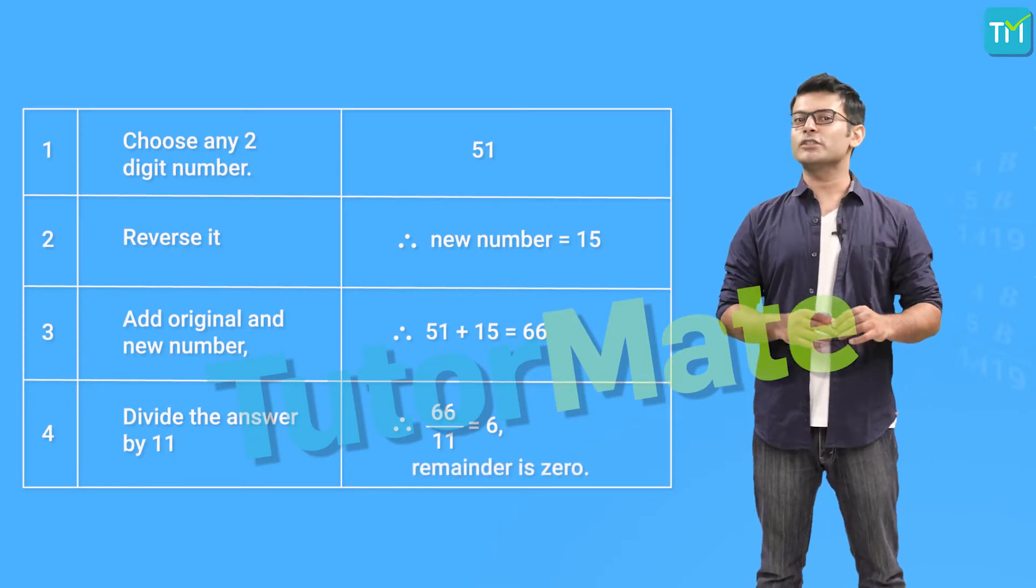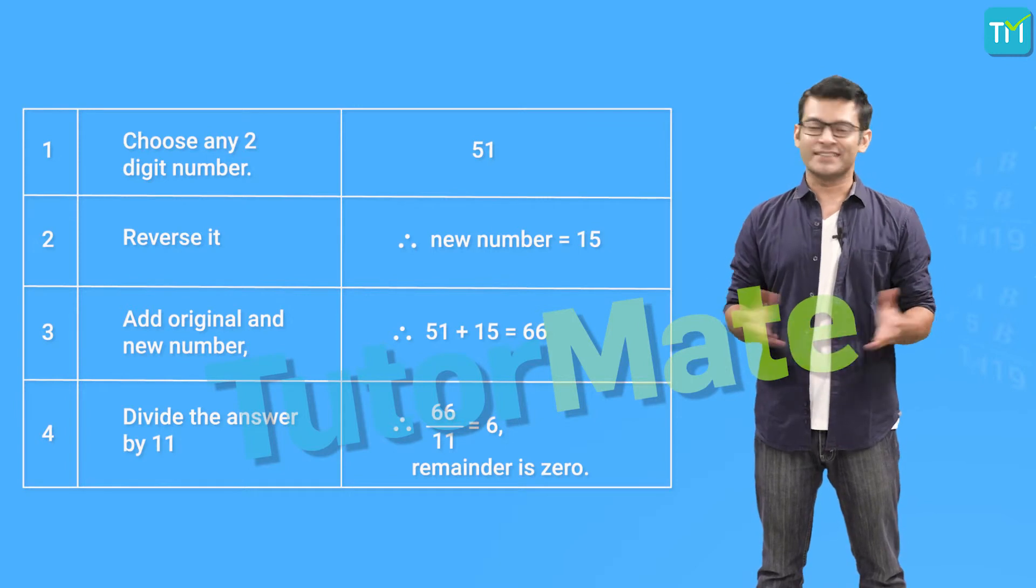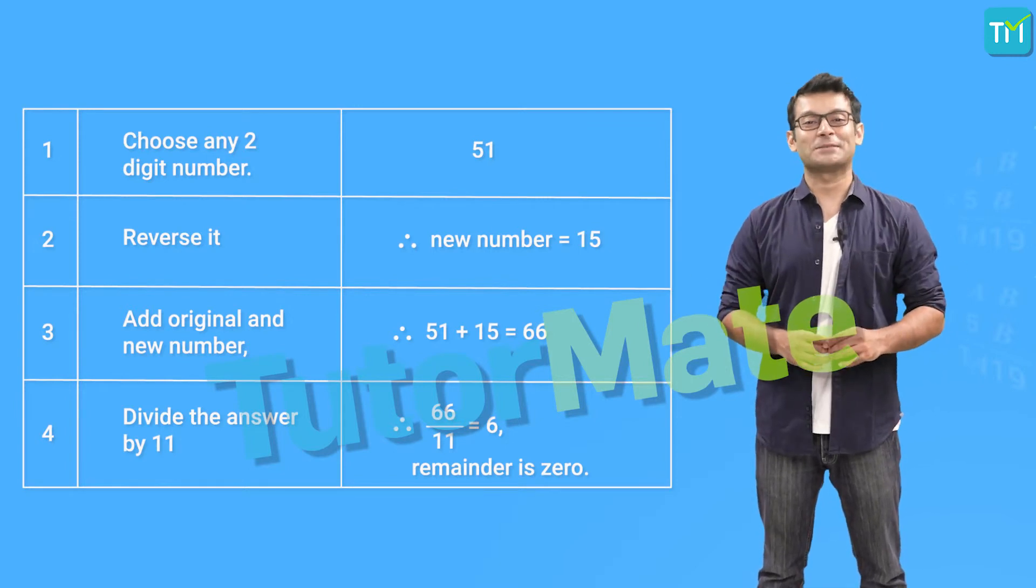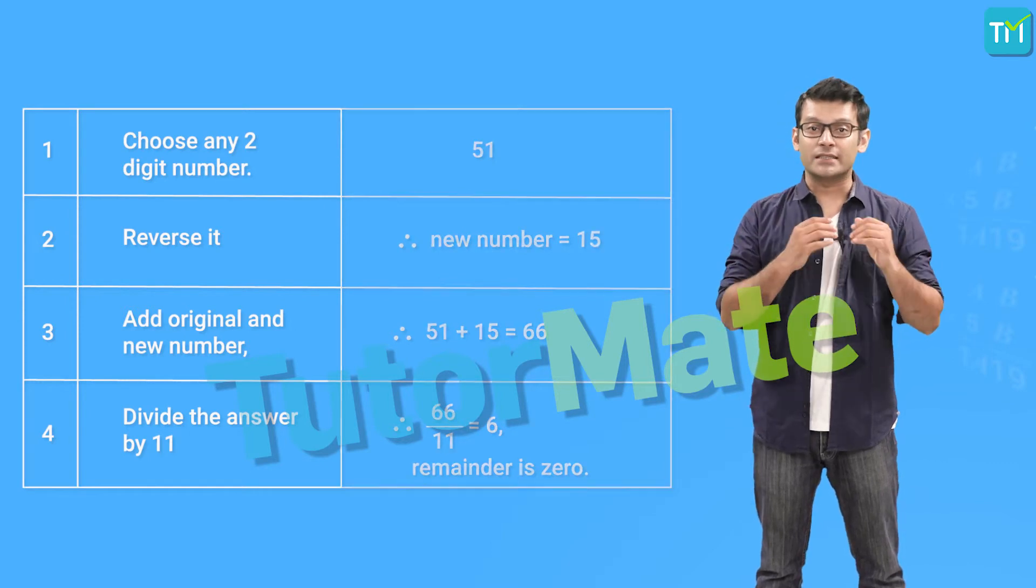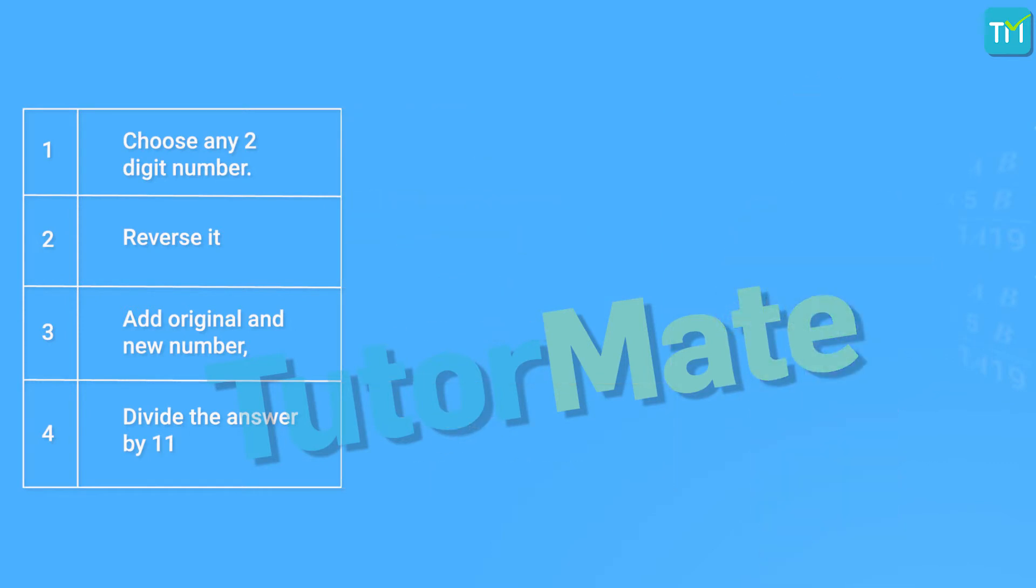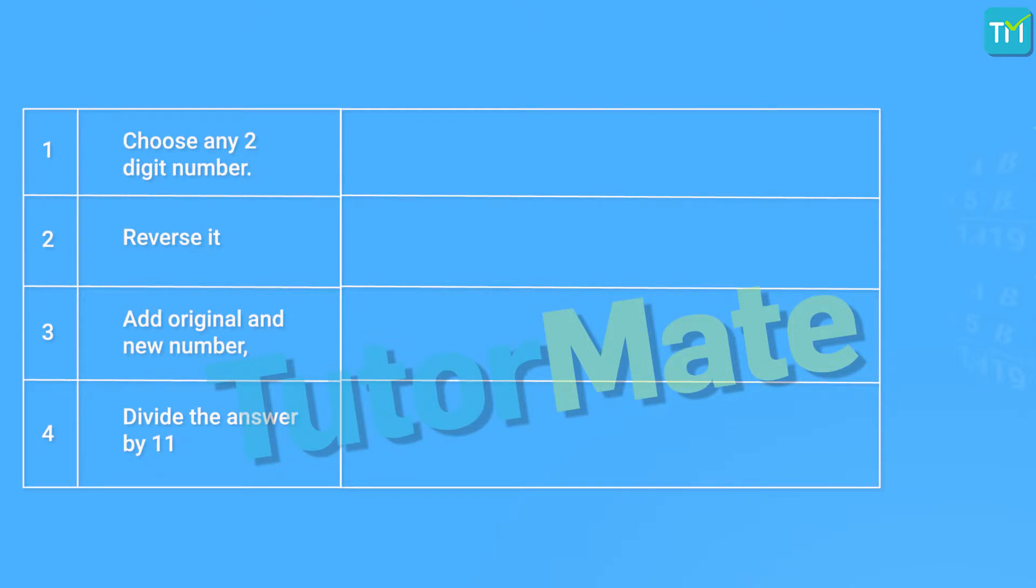Was it true for the 2 digit number you chose too? I am sure it was. Now, let's find out why this game works the way it does. So, the first step was to choose any 2 digit number, right?